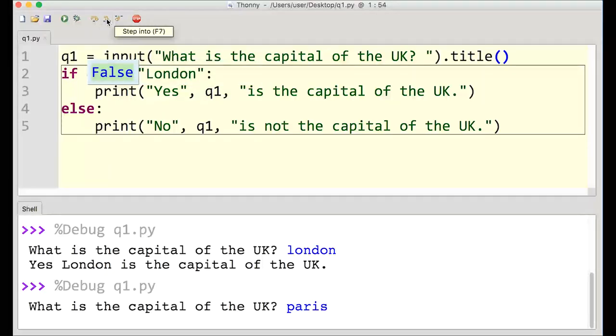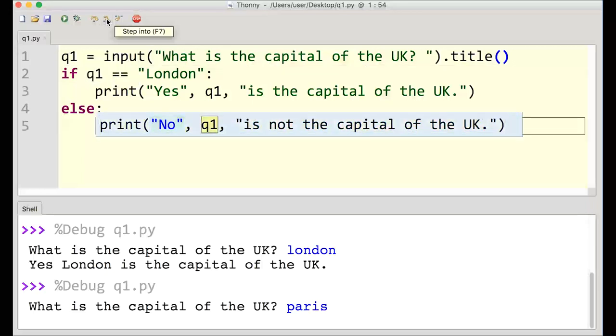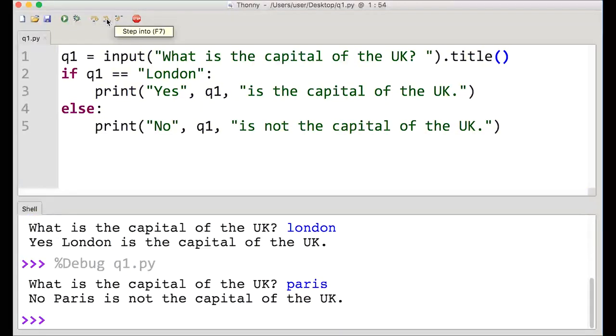Checking that, and it's false. So then instead of running the next line, it moves on to else, because it's not true. And it will print, no, Paris is not the capital of the UK. And that's the end of the program.